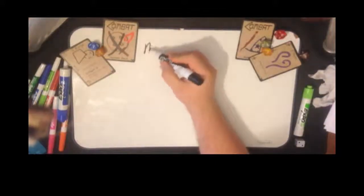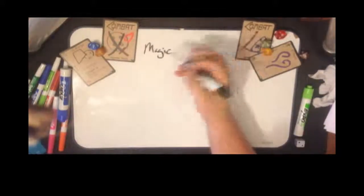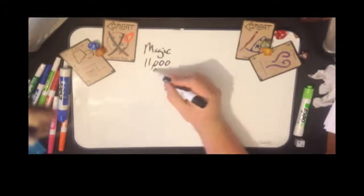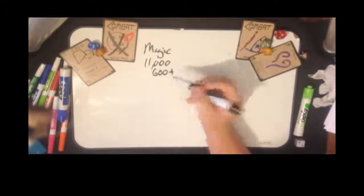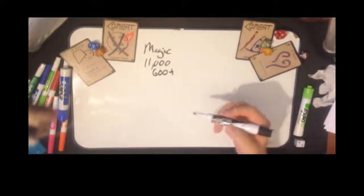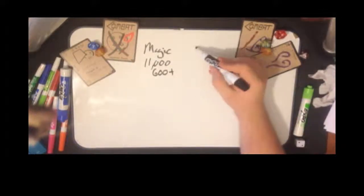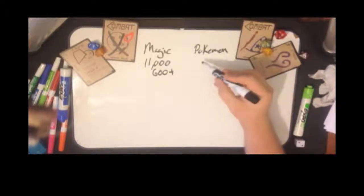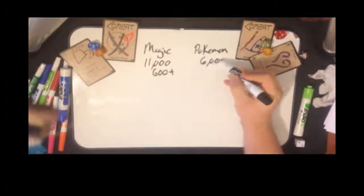There are over 11,000 Magic cards. Even in Type 2 Magic that includes the last two cycles and the core set, you're looking at over 600 cards that can see play. This is daunting to learn. Even the Pokemon Trading Card Game, which is a much more child-oriented game, has over 6,000 cards, with 1,500 currently legal.